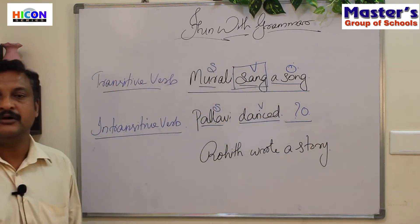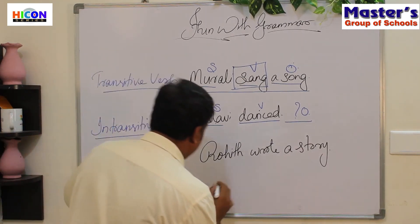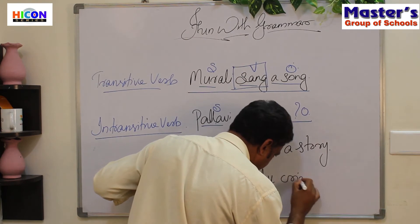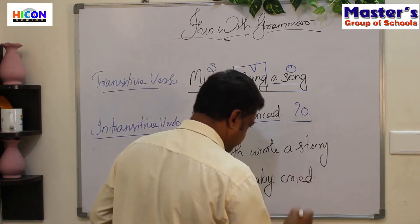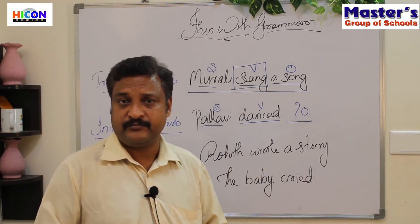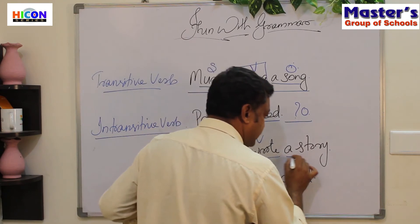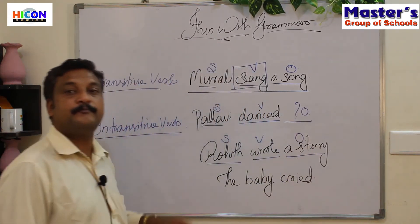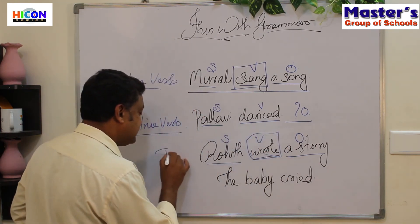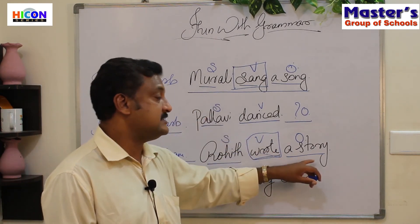Now let's look at new sentences: 'A raw hit a story' and 'The baby cried.' In the first sentence, the subject is there, a rod is the verb, and a story is the object. So the verb here is a transitive verb because it has an object after it.